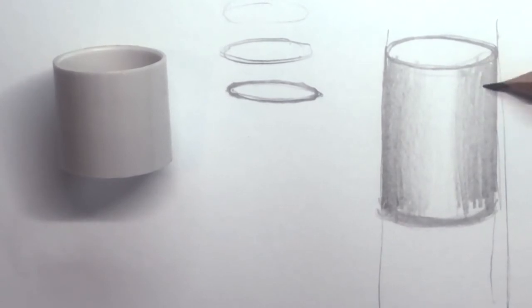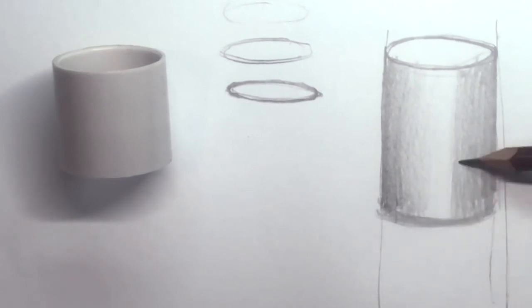So basically, that's your shape of the cylinder, like that. Now here I can see that there's a dark area there,